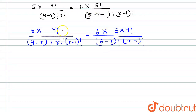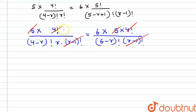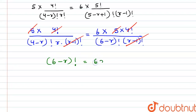Now we can see that 4 factorial can be cancelled out. Similarly, r minus 1 factorial can also be cancelled out from both sides. We can also cancel out 5 from both sides. And if we now cross multiply, we get 6 minus r factorial is equal to 6 into r into 4 minus r factorial.